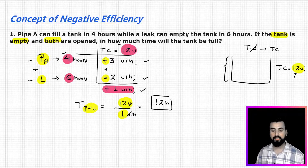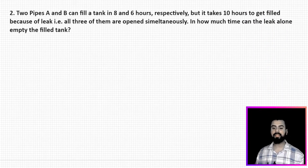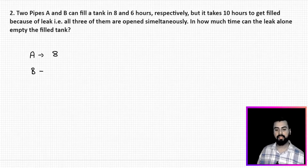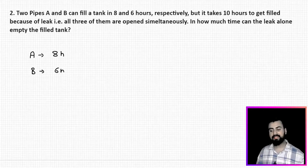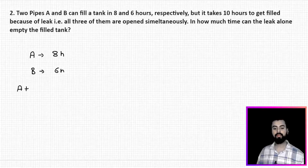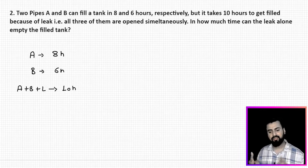I hope you understood how to deal with a negative efficiency problem. Let me show you one more question and then we will close the session. Here, there are two pipes A and B which can fill a tank in 8 and 6 hours respectively. But it takes 10 hours to get filled because of a leak — meaning when all three of them, pipe A, pipe B, and the leak, are opened simultaneously, it takes 10 hours. That makes sense because when the leak works, it will obviously take more time.